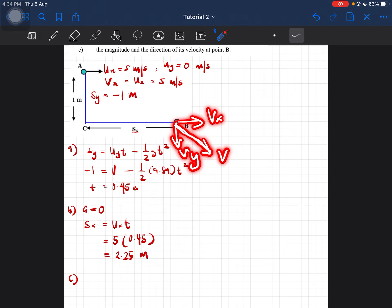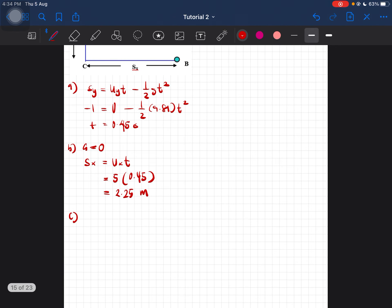All right, so now let's find the magnitude. vx is 5 meters per second. vy is uy minus gt, which is 0 minus 9.81 times t, which is 0.45.